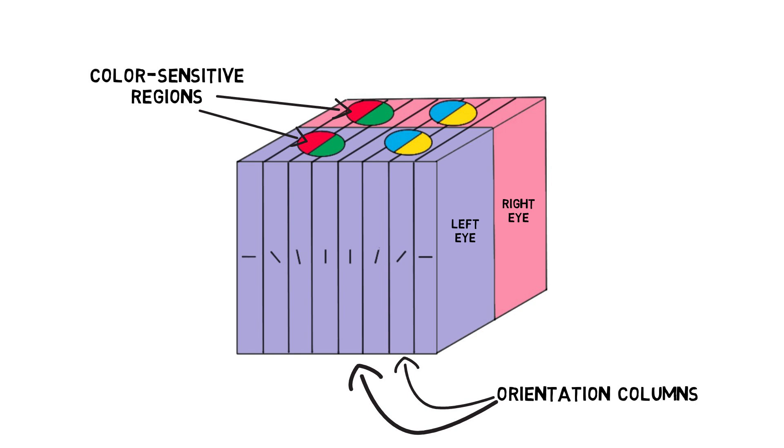These columns of neurons are themselves collected into assemblies called modules. Each module contains an array of columns necessary to analyze one small area of the visual field. Thus, to construct the visual scene, the primary visual cortex contains many of these modules.